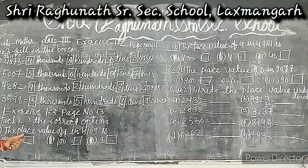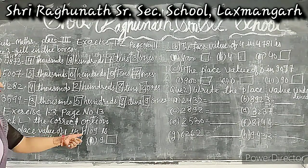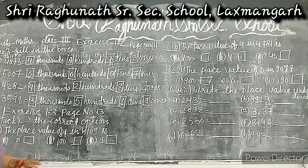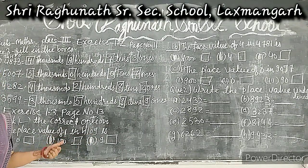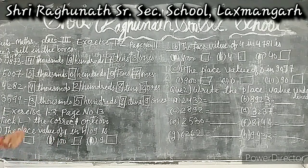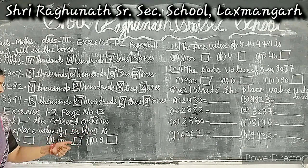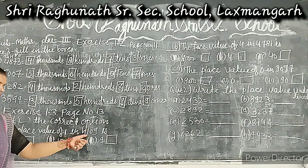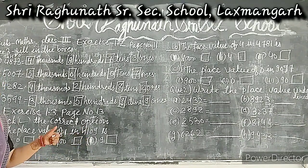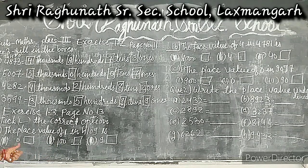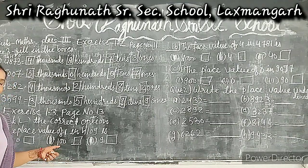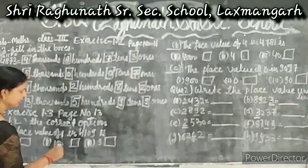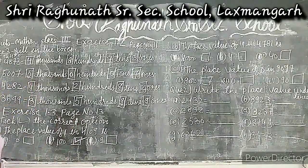First question: the place value of 1 in 4,109. The number is 4,109. What is the place value of 1 in this number? The digit 1 is in the hundreds place. So the place value of 1 should be a three-digit number. Here, 1 digit is given — this is a three-digit number in which 1 is in the hundreds place. Therefore, 1 is in the hundreds place, so this answer is correct.